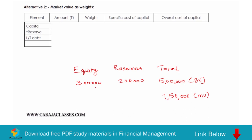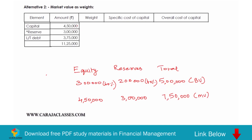We equate the market value of 7 lakh 50 thousand with the book value total of 5 lakhs to find proportions. Out of 5 lakhs, equity capital is 3 lakhs which is 60%, and reserves are 2 lakhs which is 40%. Applying the same proportions to 7 lakh 50 thousand: 7.5L × 60% = 4 lakh 50 thousand for equity capital, and 7.5L × 40% = 3 lakhs for reserves.